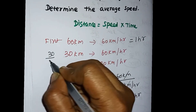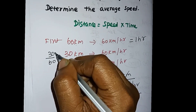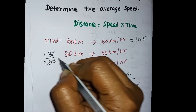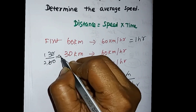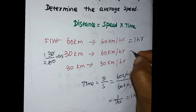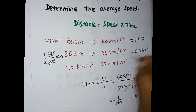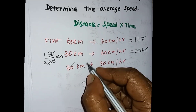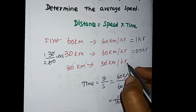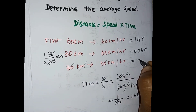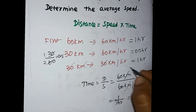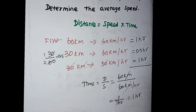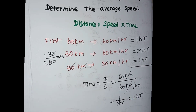For the next segment, it will be 30 by 60, which equals 1 by 2, meaning 0.5 hours. So the complete total time is 1 hour plus 0.5 hours plus 1 hour, which gives us 2.5 hours total.